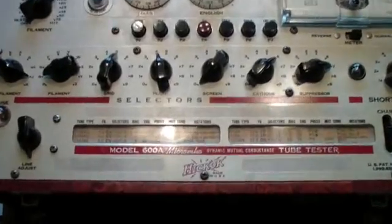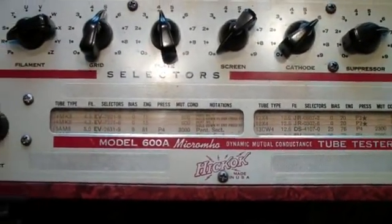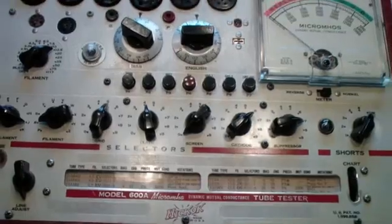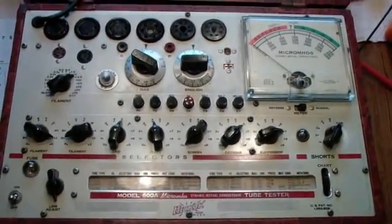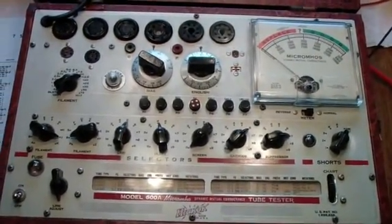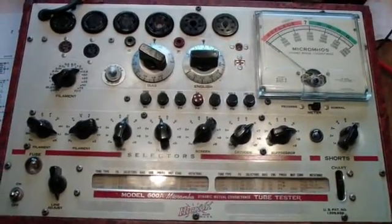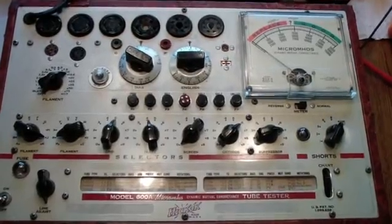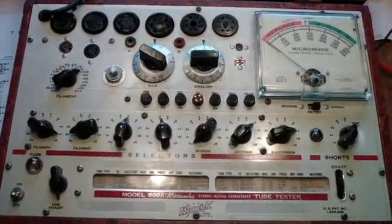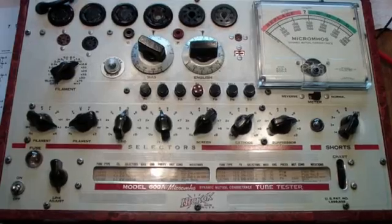So I got out my Hickok 600A. Now this is a mutual conductance tester. In fact, this is one of the Cadillac tube testers. The Hickok tube testers that did mutual conductance were considered the best in their day and even to this day. They also made this same model later under the 6000 number and the military TV7, but they're all basically the same circuit.